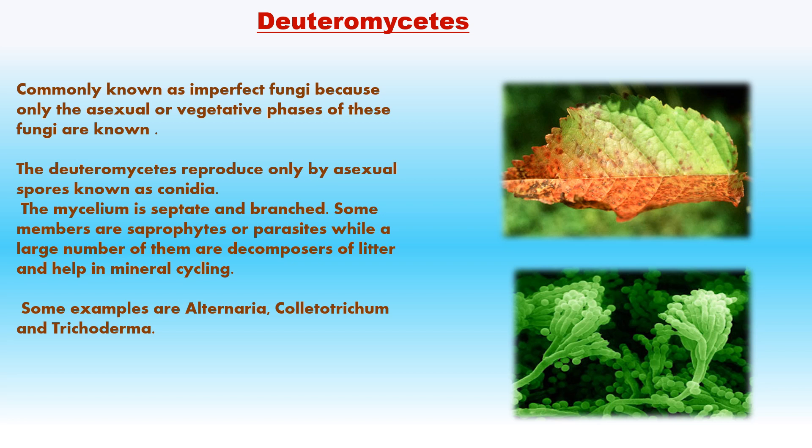Deuteromycetes or imperfect fungi are commonly known as imperfect fungi because only the asexual or vegetative phases are known — sexual reproduction has not been observed so far. They reproduce only by asexual spores known as conidia. The mycelium is septate and branched. Some members are saprophytes, some are parasites, while a large number are decomposers of litter and help in recycling of minerals. This group includes a number of human parasites that cause athlete's foot or ringworm. Examples: Alternaria, Colletotrichum, Trichoderma.